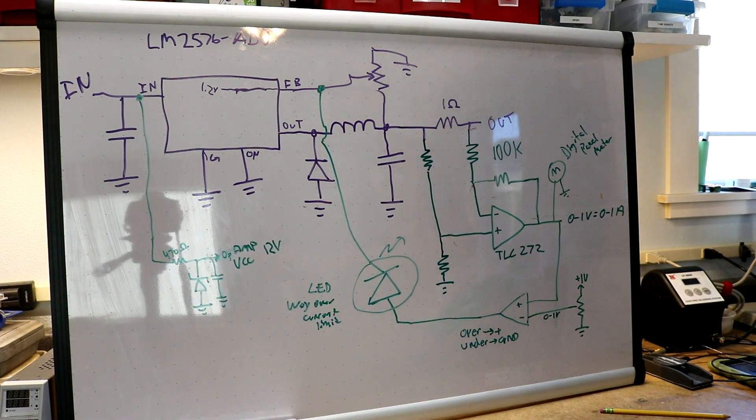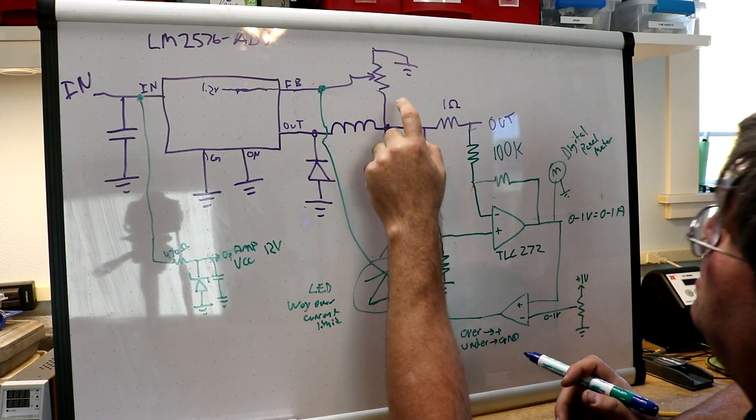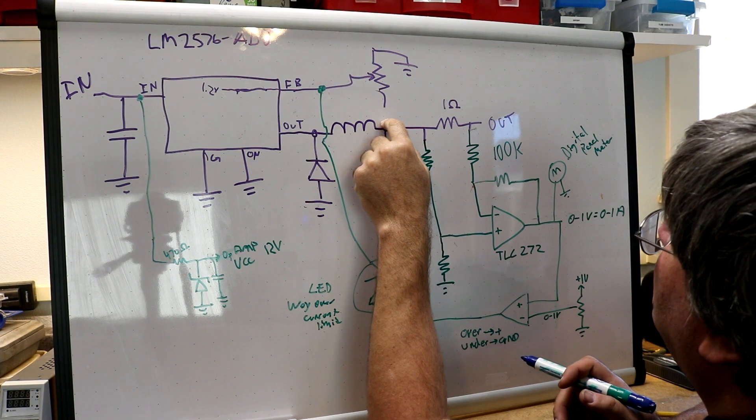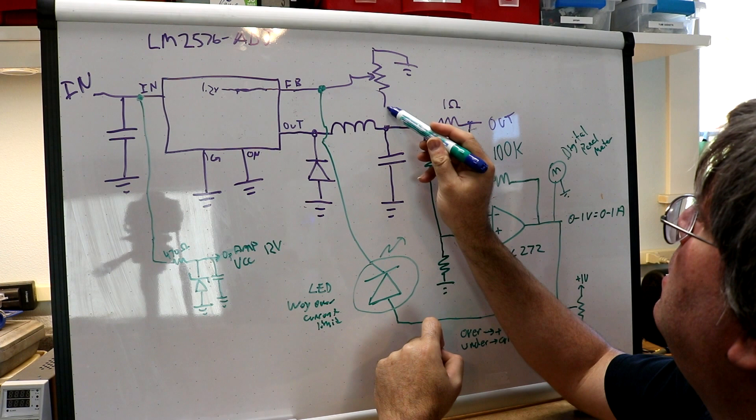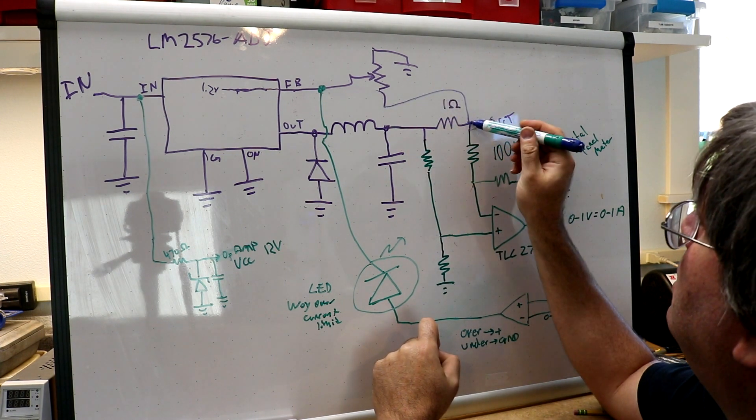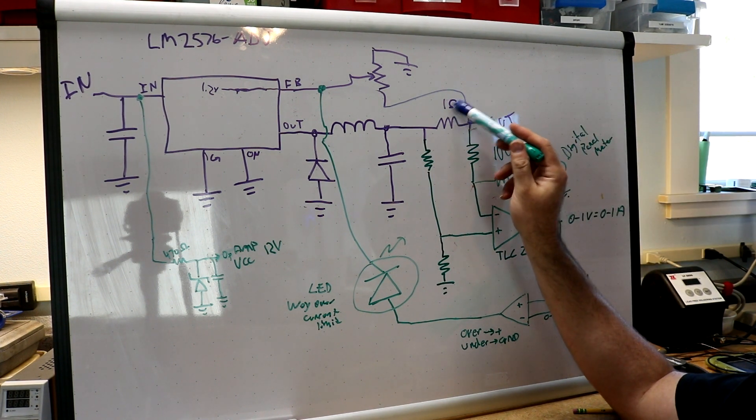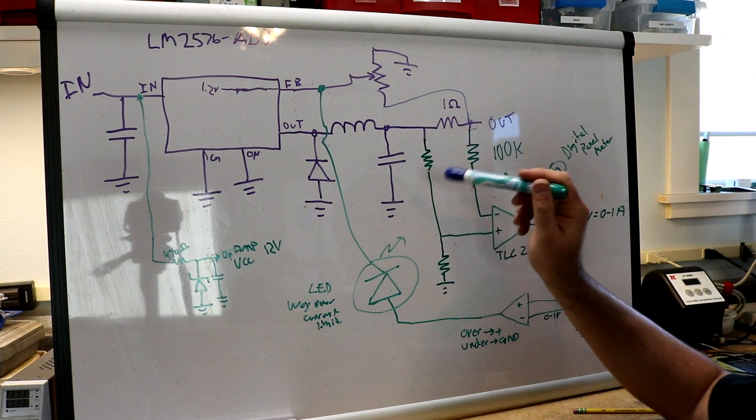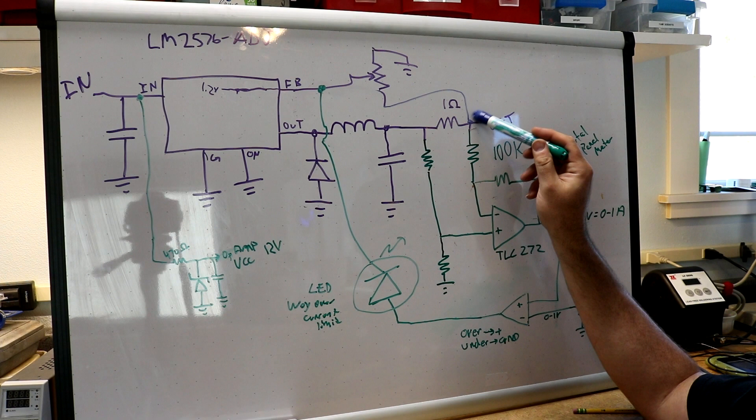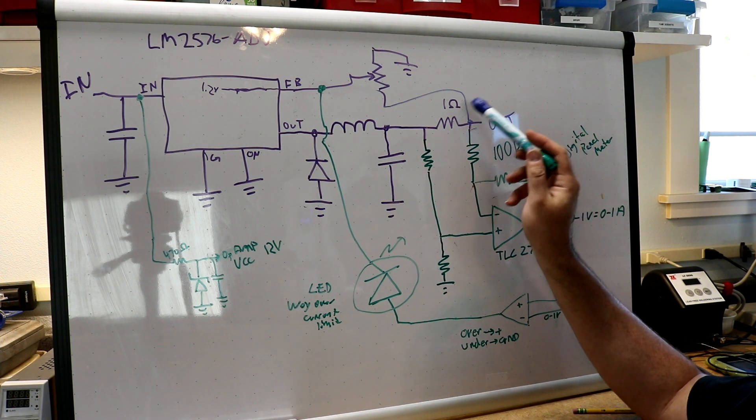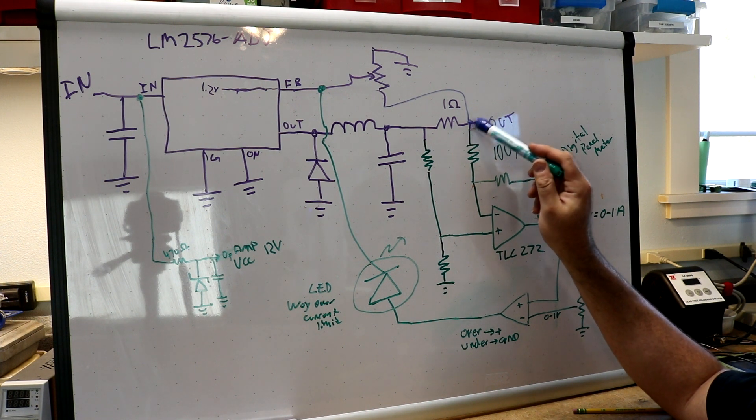Ok one final correction to the schematic is we don't actually want to sense our voltage there. We actually want to sense it here. So what that allowed us to do is to account for this one ohm resistor into the feedback circuit. So when it was connected to here there would actually be a little bit of a voltage drop and we would end up with slightly less volts than we wanted. Now that it is connected here we are getting the exact volts that we want at the output part.